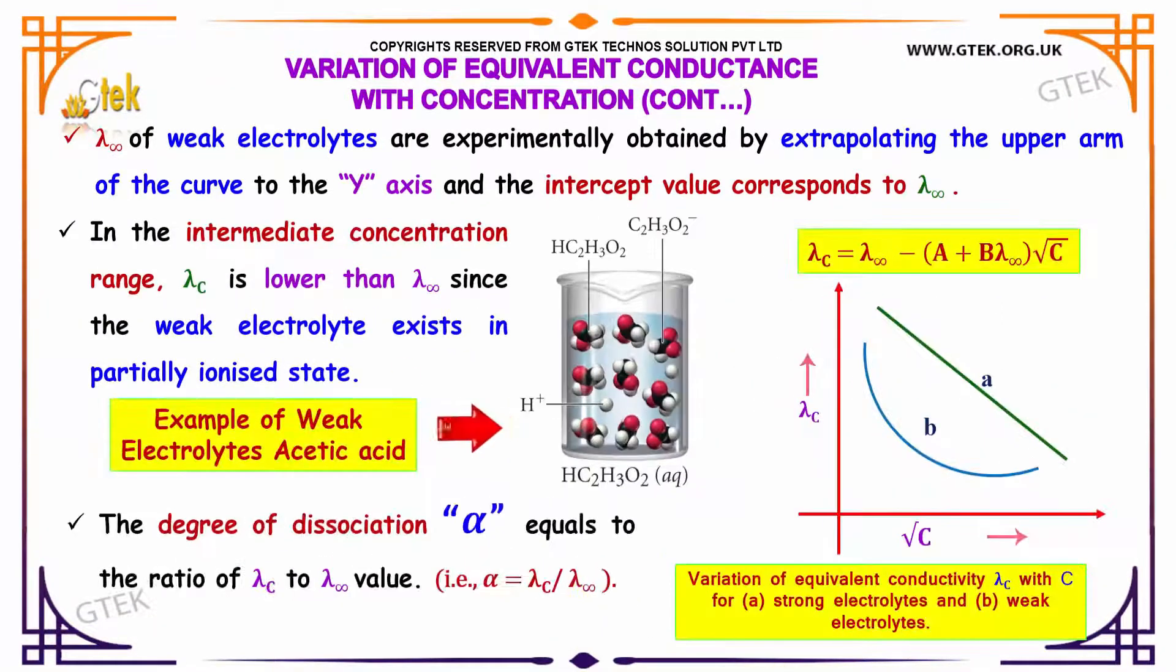Lambda infinity of weak electrolytes are experimentally obtained by extrapolating the upper arm of the curve to the y axis, and also the intercept value corresponds to lambda infinity.